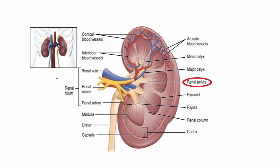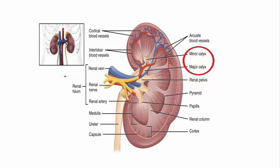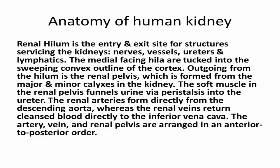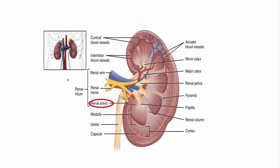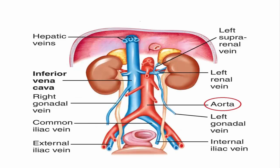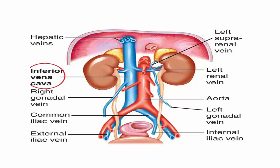Outgoing from the hilum is the renal pelvis, which is formed from the major and minor calyces in the kidney. The smooth muscle in the renal pelvis funnels urine via peristalsis into the ureter. The renal arteries form directly from the descending aorta, whereas the renal veins return cleansed blood directly to the inferior vena cava.